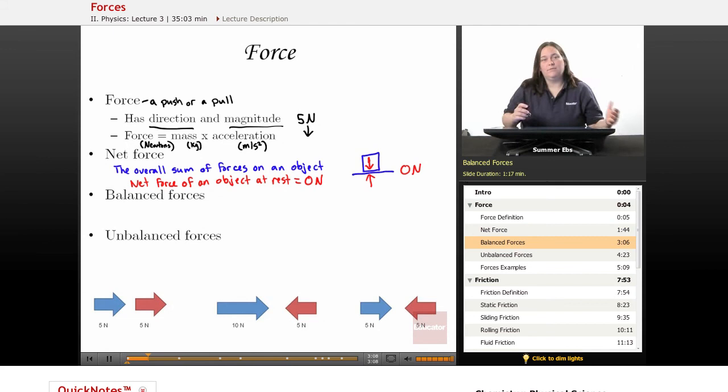So it takes us to balanced forces. If an object has balanced forces upon it, it's not changing its motion in any way. Balanced forces means the net force is zero and the object's motion is not changing.